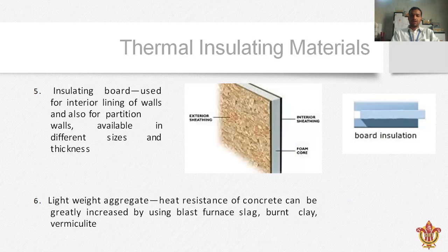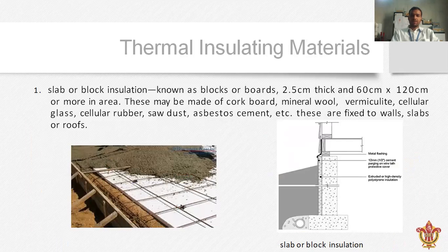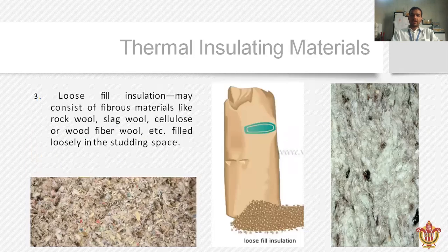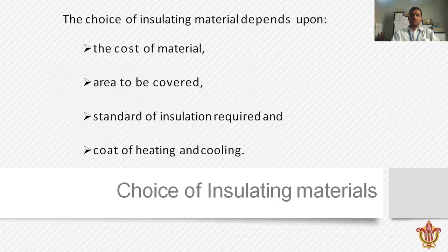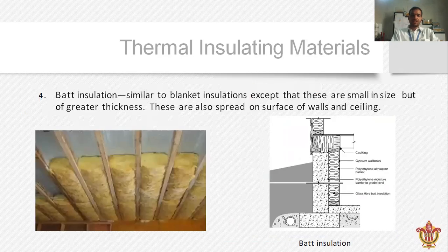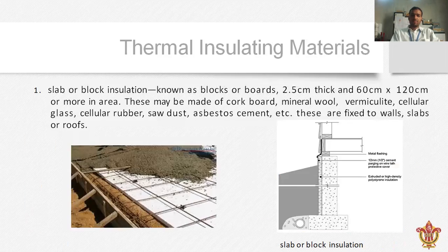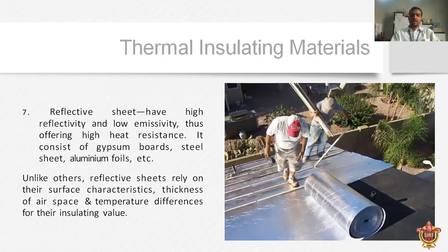So these are the different thermal insulating materials we use at the time of planning and construction of a building. The choice of insulating material depends on the cost of the material, the area to be covered, the standard of insulation required, and the cost of heating and cooling. The different types discussed include: slab and block insulation, blanket insulation, loose fill insulation, wet insulation, insulating board, lightweight aggregate, and reflective sheet.